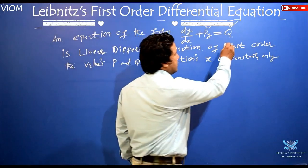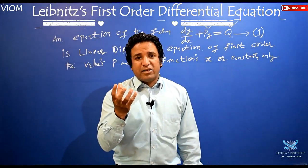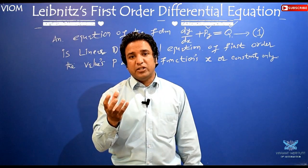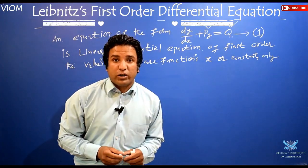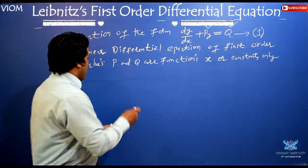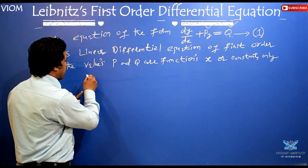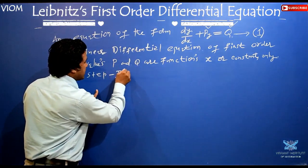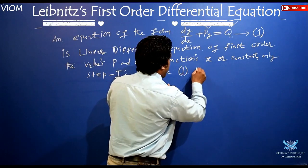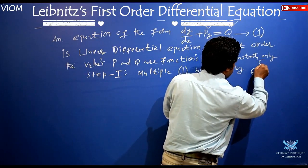Now we will find the solution. There is only one single way to find the solution of this kind of differential equation — the Leibniz linear differential equation of first order. The first step is to multiply both sides by the quantity e raised to the power of the integral of P dx.